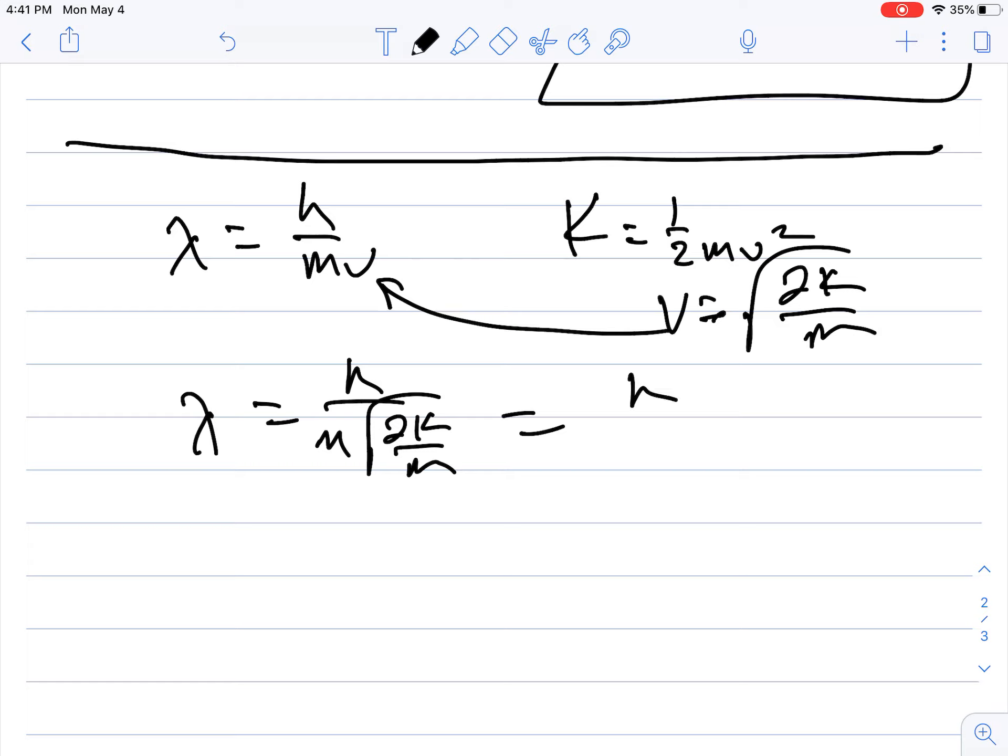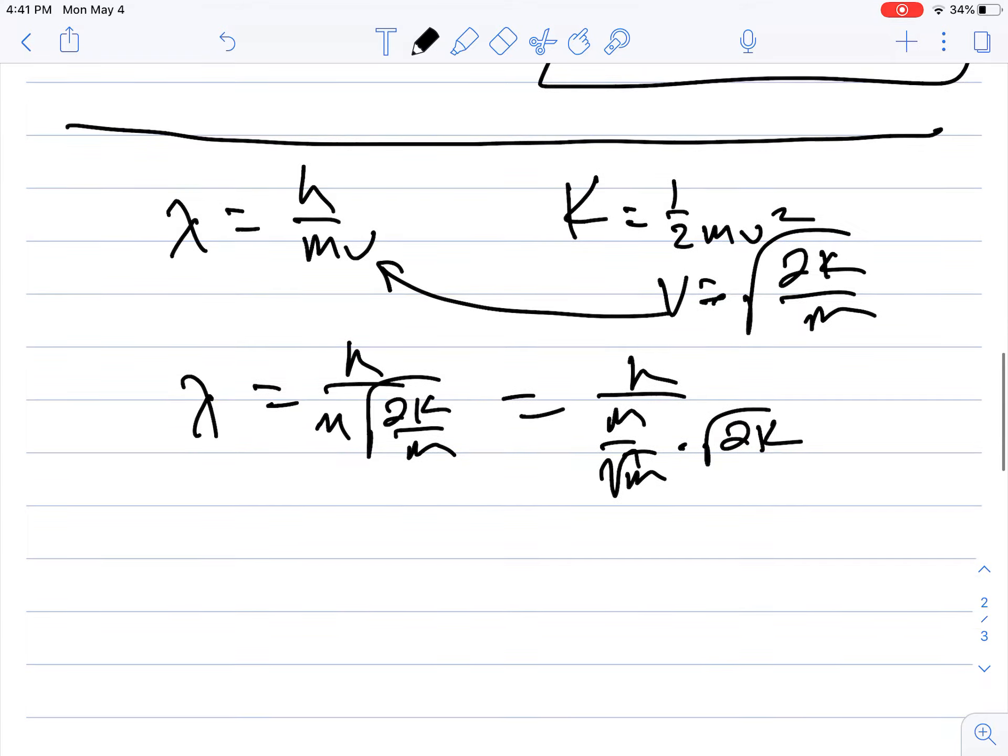And if you want to get fancy, you can write this as h over m over the square root of m times the square root of 2k. So we're going to end up with three of these kind of equations. So this is the first one.